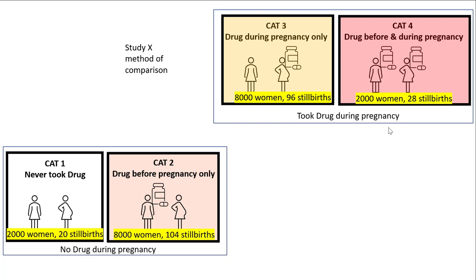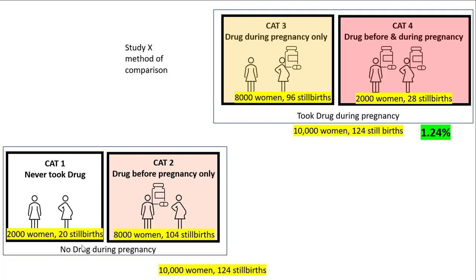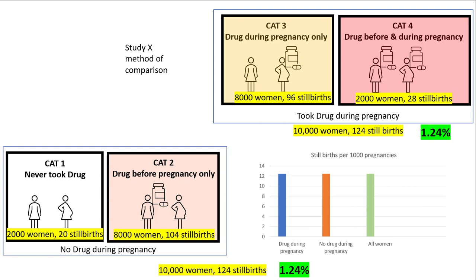Using the study's method — comparing those who took the drug during pregnancy against those who didn't — we add categories three and four together: 10,000 women, 124 stillbirths, giving a stillbirth rate of 1.24%. For those who didn't take the drug during pregnancy, adding categories one and two gives 10,000 women, 124 stillbirths — the same 1.24% stillbirth rate. This simulates the same result seen in the study, where the rates appear equal.